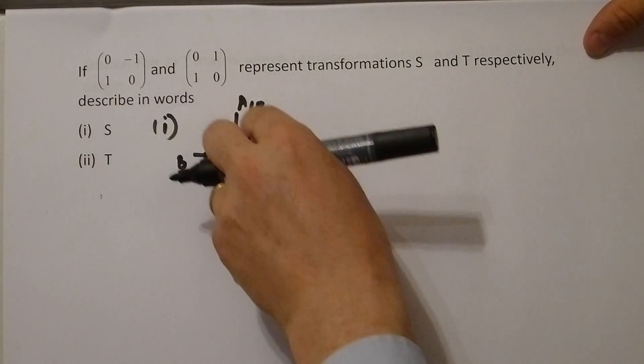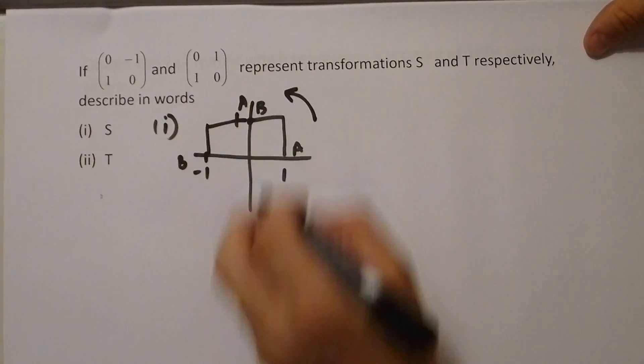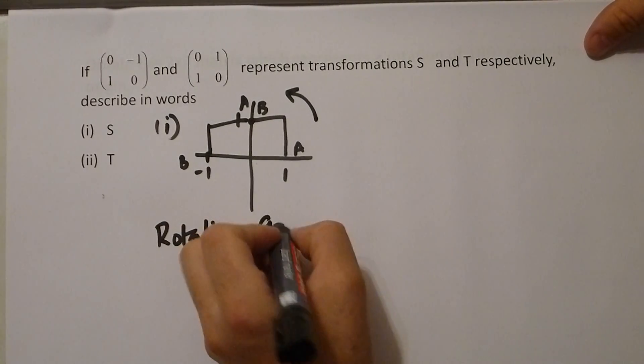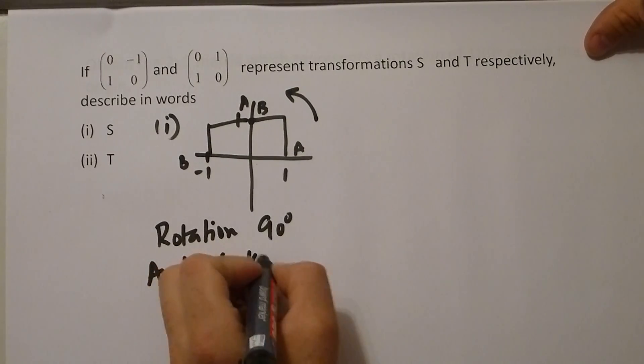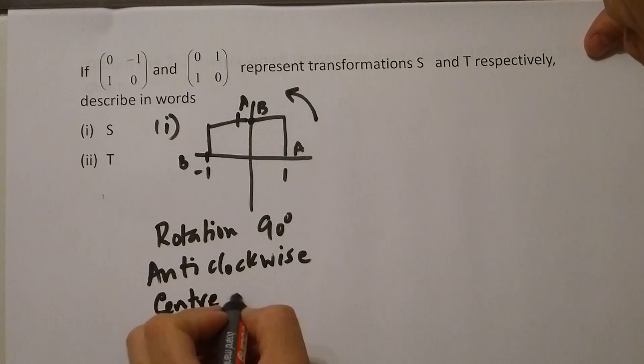But if A has moved up to there and B has moved to there, we can clearly see what has happened. We have a rotation of 90 degrees anticlockwise, center of the origin.